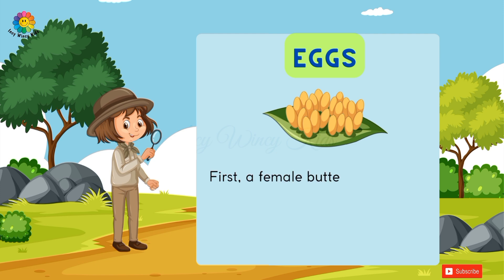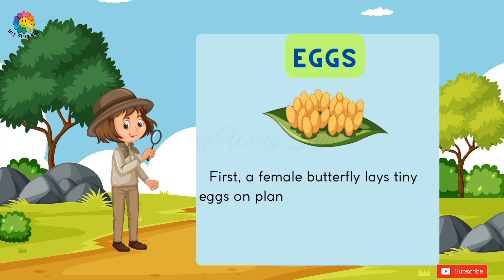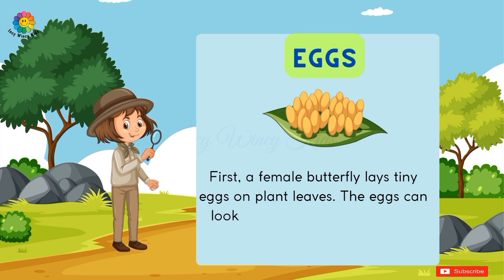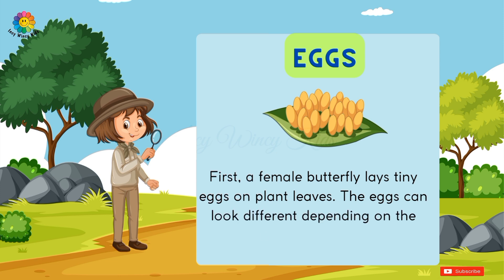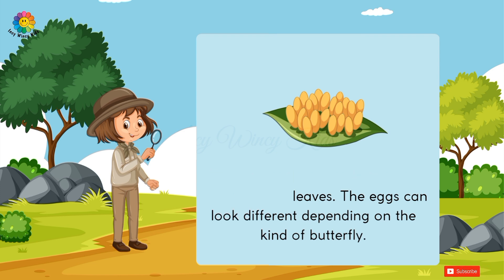The first stage is eggs. First, a female butterfly lays tiny eggs on plant leaves. The eggs can look different depending on the kind of butterfly.